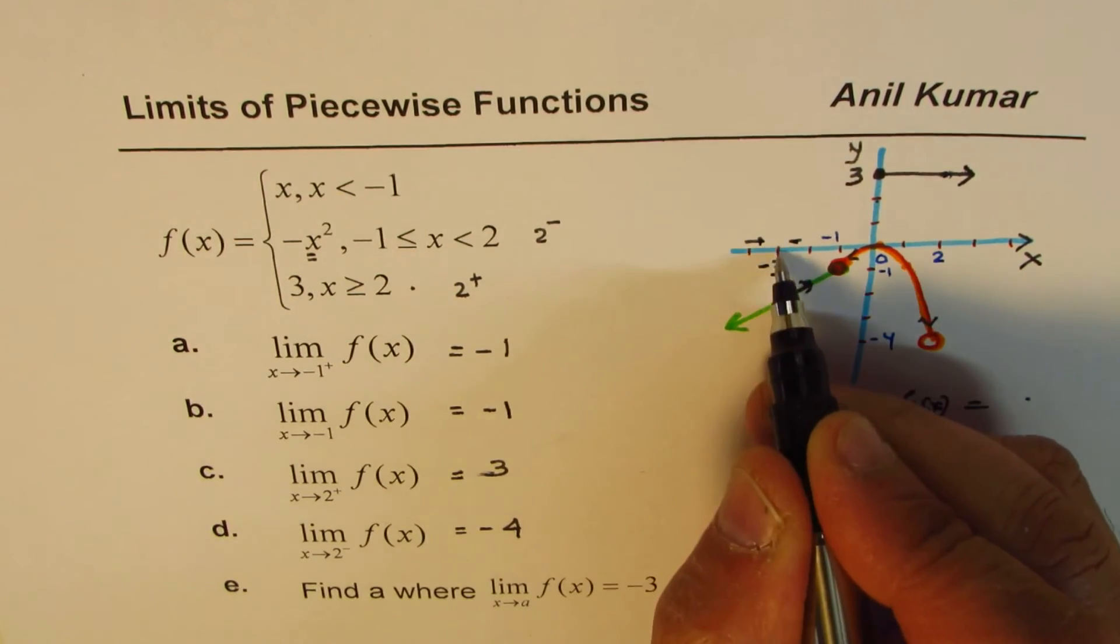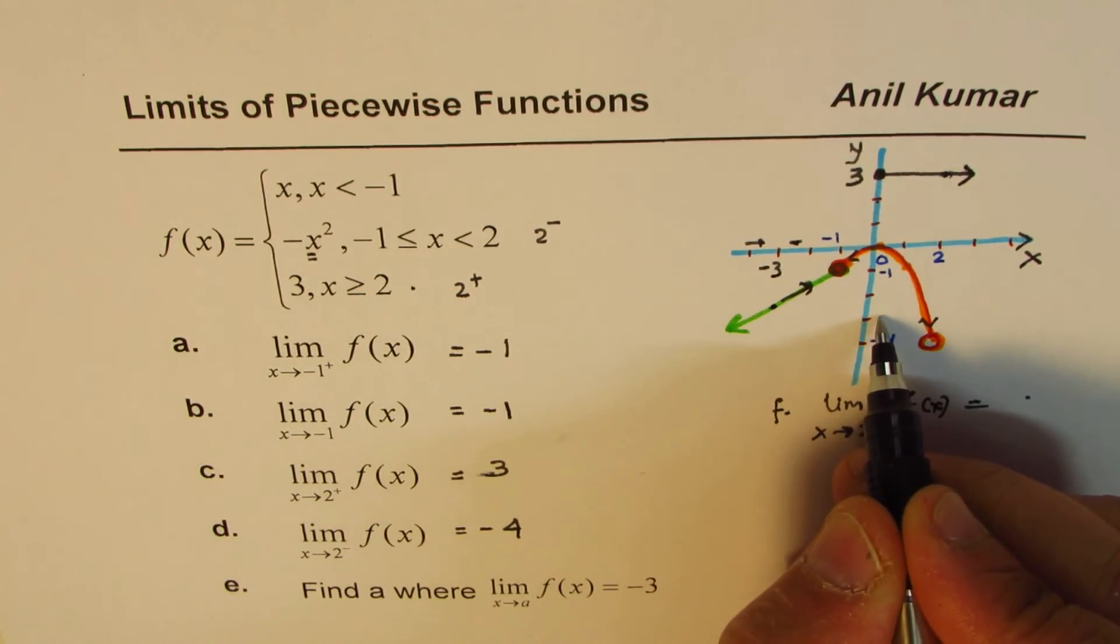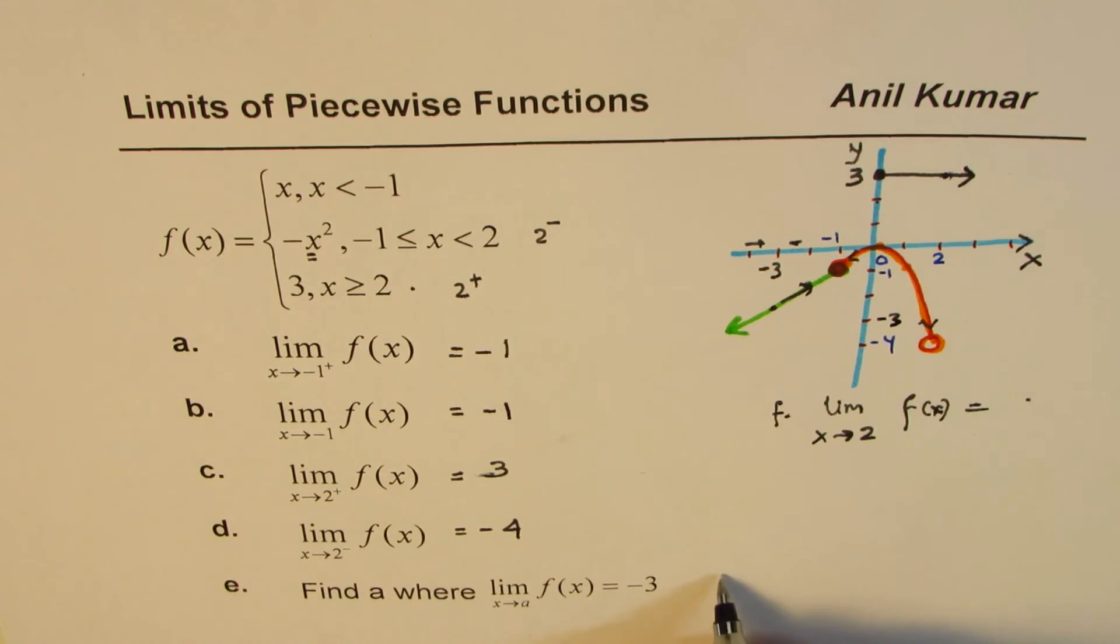if you approach from either side, you know, you approach -3. So the answer here is a equals to -3.